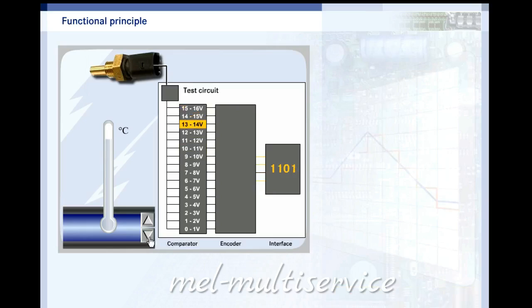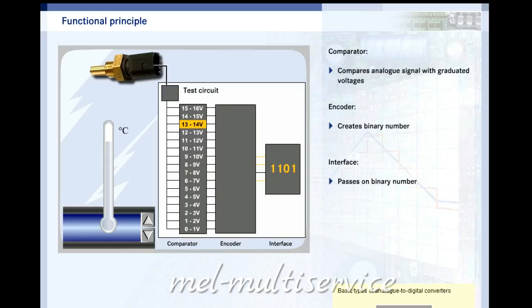This is what you saw in the comparator of the analog to digital converter. The measurement voltage is compared with graduated voltages. Each graduation is assigned the corresponding binary number in the encoder. The binary number is sent to the other digital circuits in the control unit. You may continue to try this out if you desire. Open the additional information to find out about the three basic types of analog to digital converter.